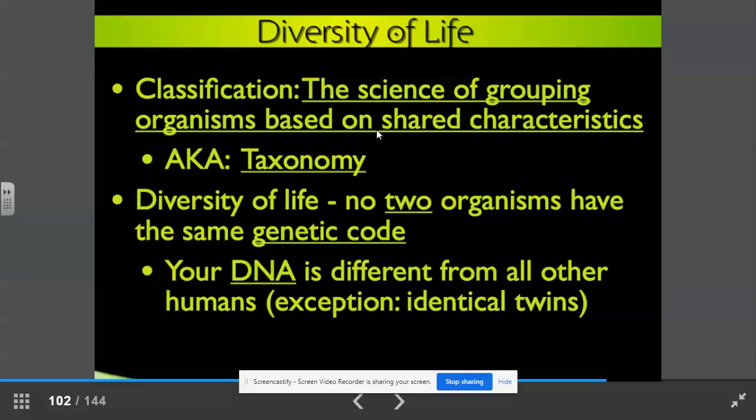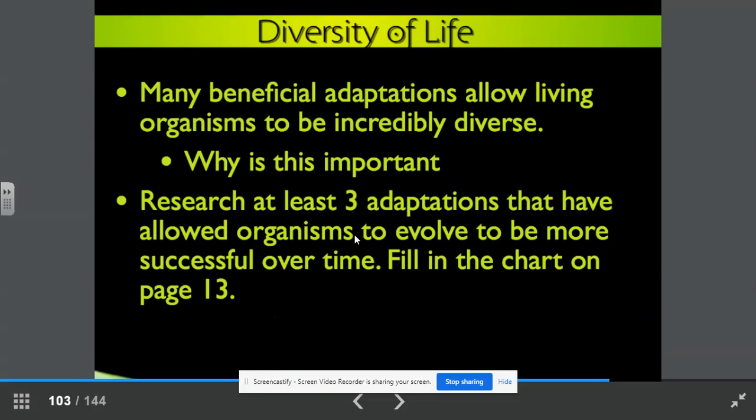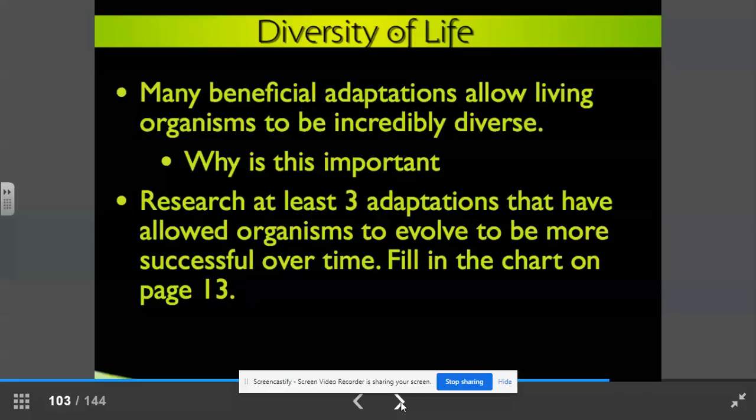So classification. This is the science of grouping organisms based on shared characteristics. We call this science taxonomy. The diversity of life. No two organisms have the same genetic code. Your DNA is different from all other humans. The only exception to this is identical twins. Identical, not fraternal. Many beneficial adaptations allow living organisms to be incredibly diverse. Think about why is this important. Research at least three adaptations that have allowed organisms to evolve and to be more successful over time, and use this information to fill in the chart on page 13. Think about the finch beaks that we studied with Darwin and his work in the Galapagos Islands.